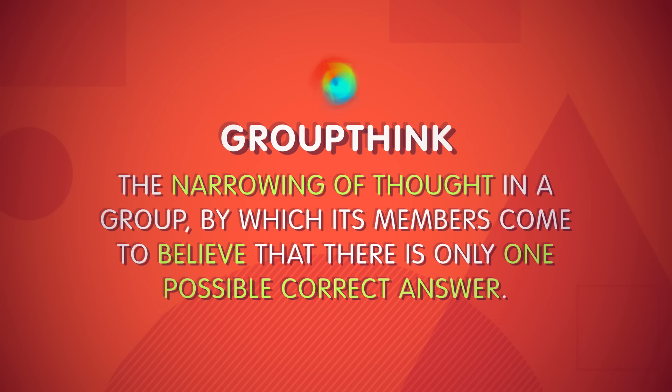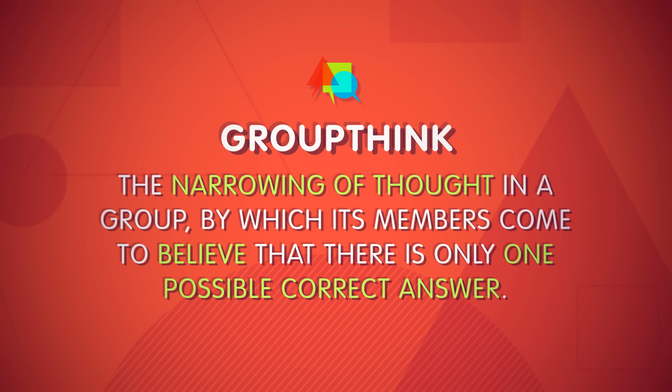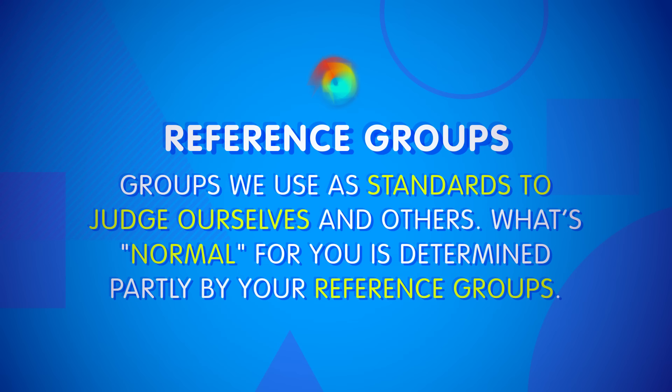This idea of group values points us to another important concept in understanding conformity — the idea of groupthink. Groupthink is the narrowing of thought in a group, by which its members come to believe that there is only one possible correct answer. Moreover, in a groupthink mentality, to even suggest alternatives is a sign of disloyalty to the group. Another way of understanding group conformity is to think about reference groups — groups we use as standards to judge ourselves and others. What's normal for you is determined partly by your reference groups. In-groups are reference groups that you feel loyalty to and identify with, but you can also compare yourself to out-groups, which are groups that you feel antagonism towards and don't identify with.